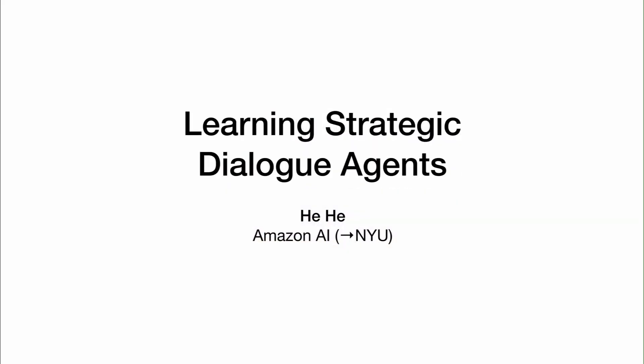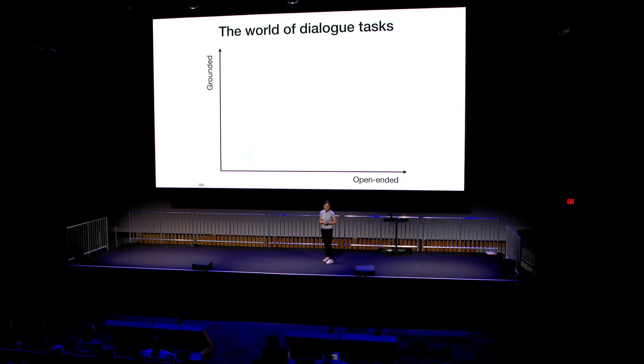Thank you, it's a pleasure to be here and share some of our recent works on dialogue. When we're talking about dialogue tasks, there are two important axes to consider. The first is grounded, meaning how much of the conversation is talking about a particular world. And the second is open-endedness, meaning how diverse the content is — what kind of things can you talk about in the conversation?